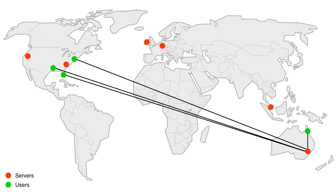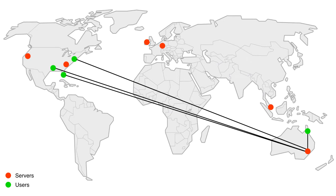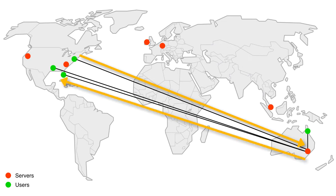There are two problems with this. One is that the connection from people in the US to Australia is probably worse than their connection to a local server, so the round-trip time is longer. The other problem is that the end-to-end connection from someone in the US to another person in the US goes all the way to Australia, which is really inefficient — and that's what we're trying to solve with cascaded bridges.